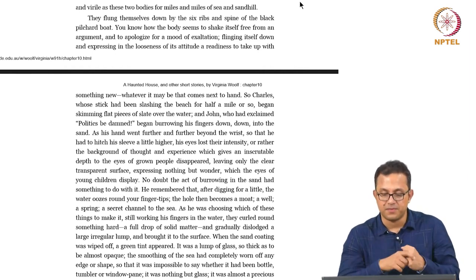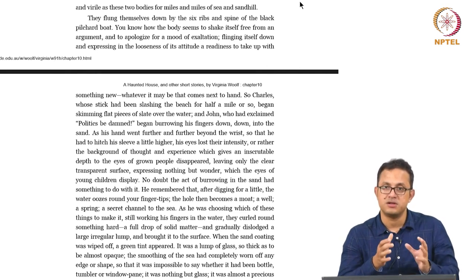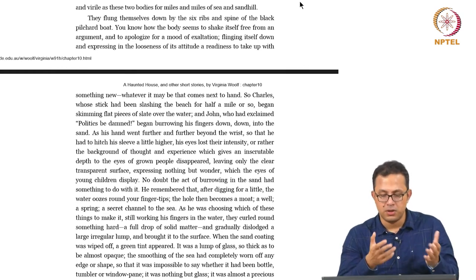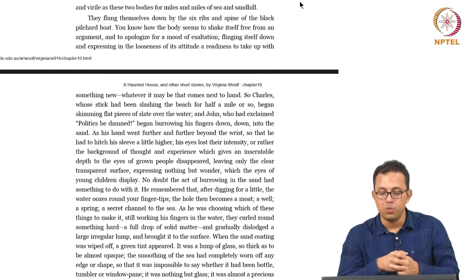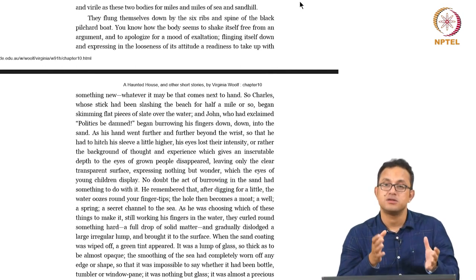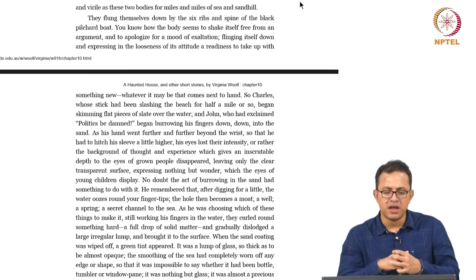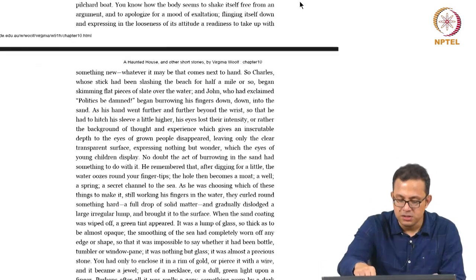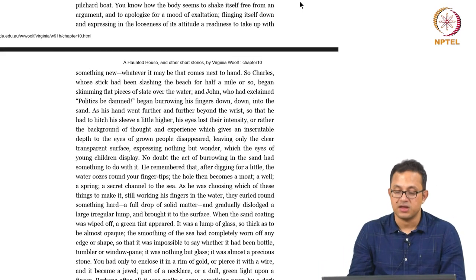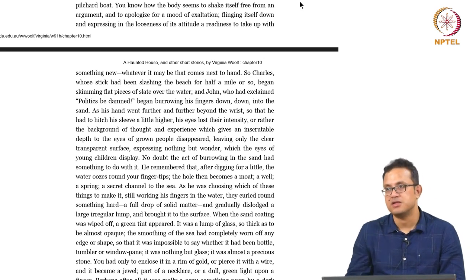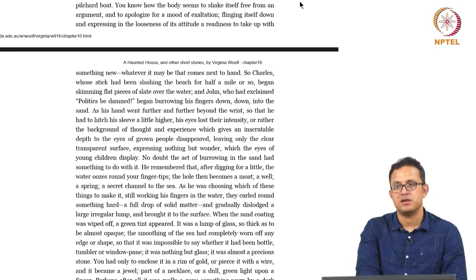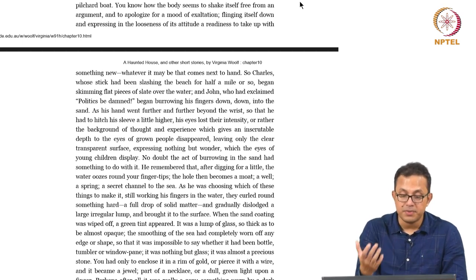The lump surfaced up, came to the surface. 'When a sand coating was wiped off, a green tint appeared. It was a lump of glass, so thick as to be almost opaque. The smoothing of the sea had completely worn off any edge or shape it may have had at one point in time — it is completely smoothed away by the endless coming in and going of the sea. So it was impossible to say whether it had been a bottle, tumbler or windowpane. It was nothing but glass — it was almost a precious stone.' This piece of glass is impossible to identify what it was part of initially. In other words, it is now post-purpose. The sea, which has come and gone over and over again and smoothed it in due course of time, has made it infinitely and perfectly purposeless in quality.